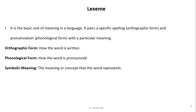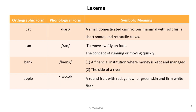The basic unit of a lexicon is a lexeme — a single individual word. It is a basic unit of meaning in language and pairs a specific spelling (orthographic form) and pronunciation (phonological form) with a particular meaning. For example, the orthographic form 'cat' is pronounced /kæt/ and means 'a small domesticated carnivorous mammal.' Similarly, 'run' is pronounced /rʌn/ and means 'to move swiftly on foot.'